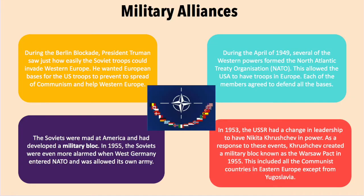During the Berlin blockade, President Truman saw just how easily the Soviet troops could invade Western Europe. He wanted European bases for American troops to prevent the spread of communism and to help protect Western Europe. During April 1949, several of the Western powers formed the North Atlantic Treaty Organization, known as NATO. This allowed the United States to have troops in Europe, and each of the members agreed to defend all of the bases.